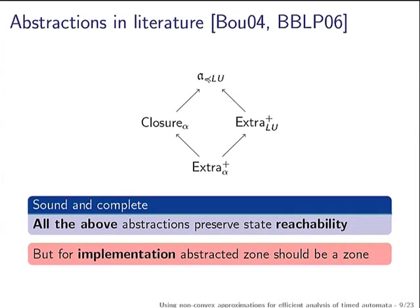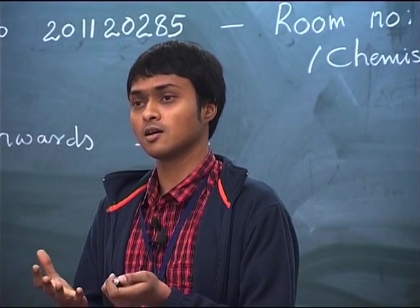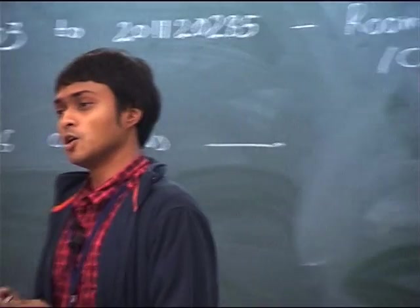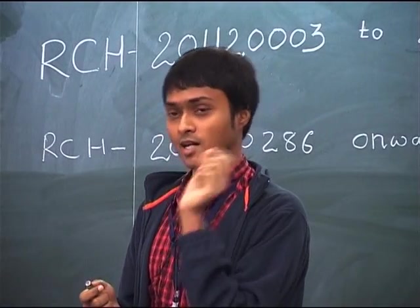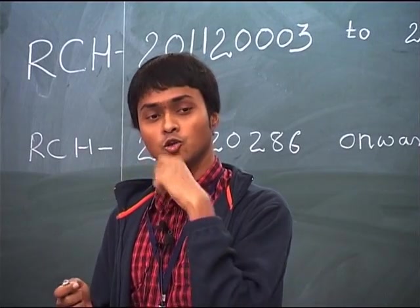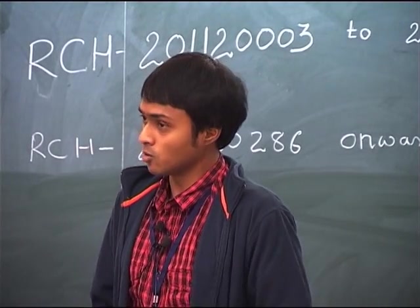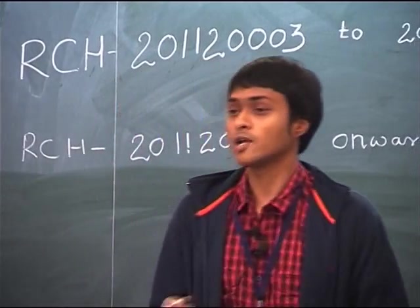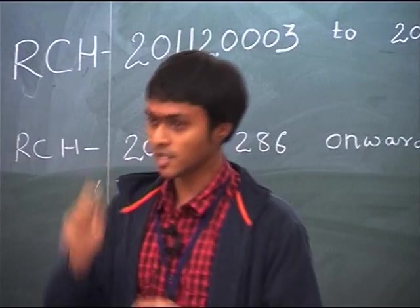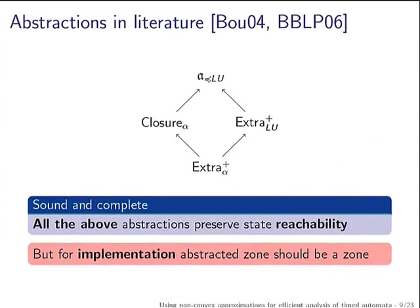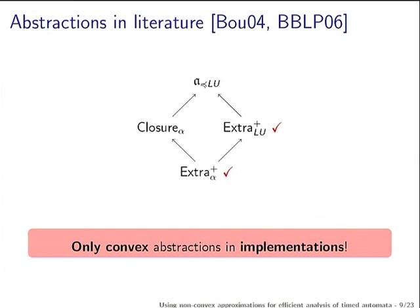All these abstractions are known to be sound and complete. There is one constraint: you want your abstraction to yield a set that is easy to handle. In addition to soundness and completeness, you want your abstraction to give you back a zone, because we know how to handle zones very well. Only two abstractions have been used for implementations — they are called convex abstractions because a zone is a convex set.